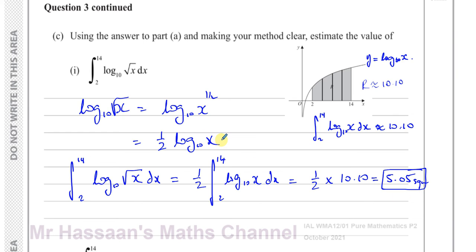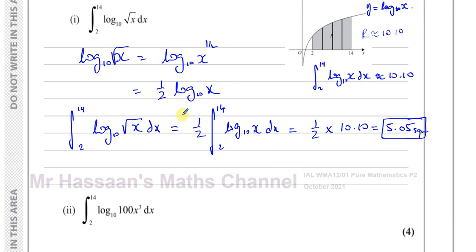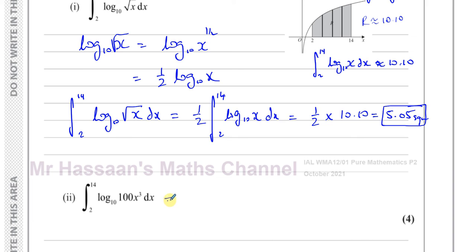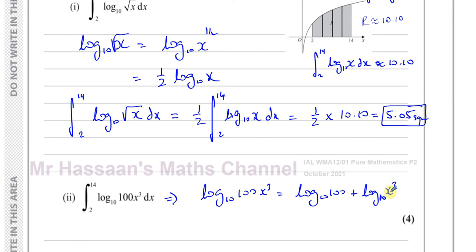That's the answer to part C part 1 — just using the laws of logarithms to write it in a simpler form. Now part 2 is very similar. I'm going to split log base 10 of 100x³ into separate logarithms. Using the law of multiplication: log base 10 of 100 times x cubed equals log base 10 of 100 plus log base 10 of x cubed. Log base 10 of 100 equals 2 because 10 squared is 100.